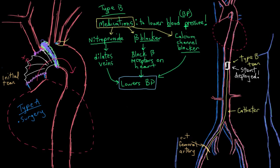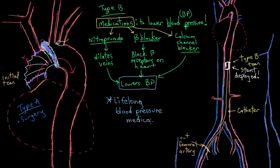With either type of treatment — medical or surgical, whether it's a type A or a type B dissection — the patient would be put on antihypertensive medications for the rest of their life to minimize the chance of another dissection happening, and also to reduce their risk of other hypertension-caused problems that may crop up in the future.